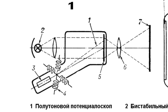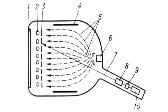Bistable storage tubes have a positive target potential with respect to the cathode. In this case, the imaging beam transfers the target's potential into two stable states. Thus, the image on the screen of a bistable storage tube can be saved for several hours.